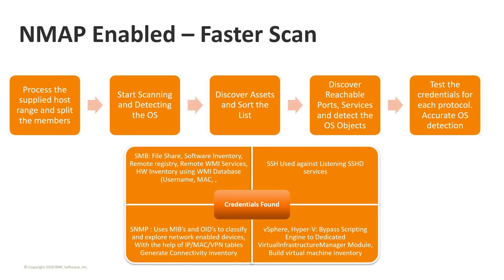Let's see a quick overview of how the scan is performed. When NMAP is enabled, the scan is faster compared to when it's disabled. First, it processes the supplied host range and splits it into individual IP addresses. NMAP then starts scanning and detects the operating system based on fingerprint probes. NMAP sorts the discovered versus non-discovered assets and then tries to discover reachable ports, services, and detects operating system objects.